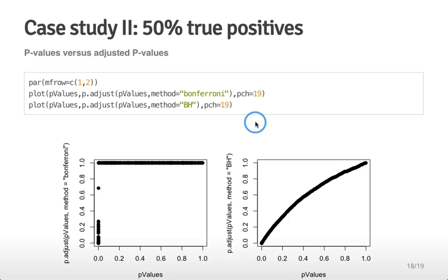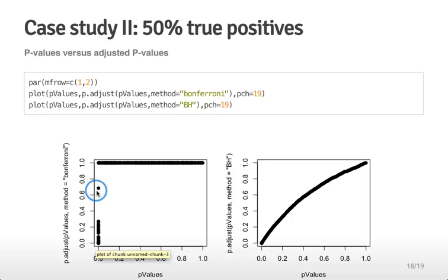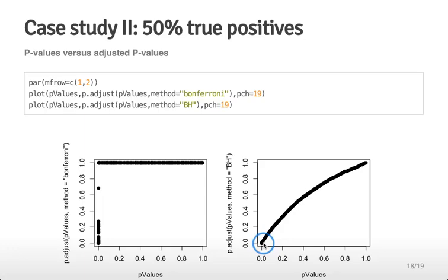I can also plot p-values versus adjusted p-values for both Bonferroni and Benjamini-Hochberg to understand what p-adjustment does. For Bonferroni, I multiply each p-value by 1,000, so only the very smallest p-values remain below 1; after a certain point all adjusted p-values are capped at 1, producing a flat line. With Benjamini-Hochberg, you see an increasing function where the adjusted p-value is slightly larger than the actual p-value across the entire range, but not dramatically larger in this case, because there are many significant results.